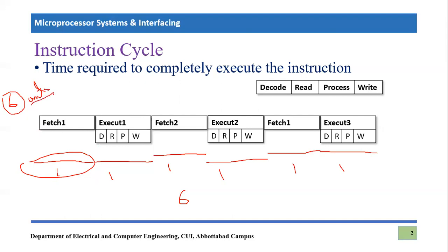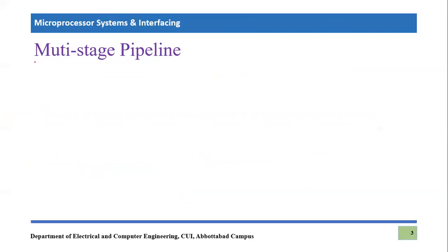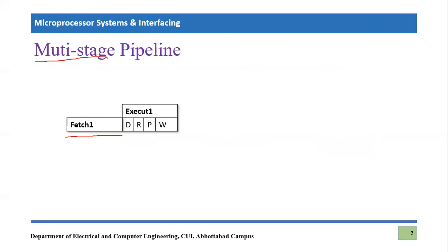Now let's repeat this procedure with the implementation of multi-stage pipeline, using the same example of three instructions. First, you have to fetch the very first instruction, consuming one unit of time. Then you execute it performing decode, read, process, and write — similar to before. But what is new in this scenario is that along with the execution of the first instruction, while it is in progress, you also fetch the next instruction simultaneously.